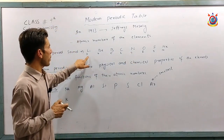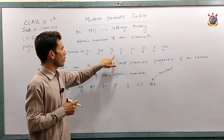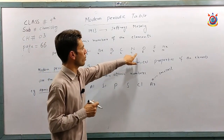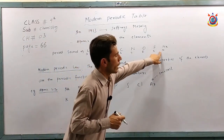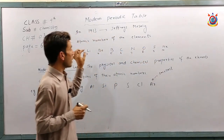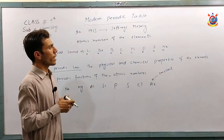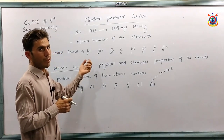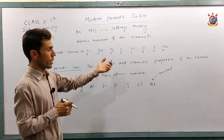The atomic number of lithium is 3, beryllium is 4, boron 5, carbon 6, nitrogen 7, oxygen 8, fluorine 9, and neon 10. So there is a continuous increase in the atomic number of the elements as we move from left to right in the periodic table.